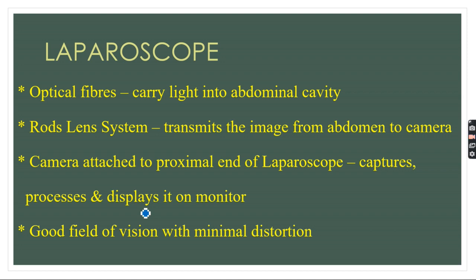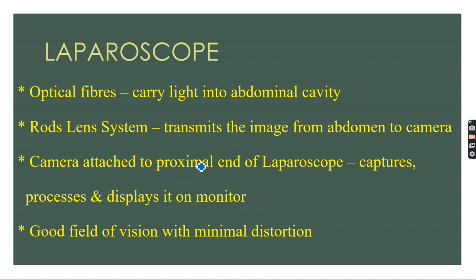The role of optical fibers in the laparoscope is to carry light into the abdominal cavity, whereas the rod lens system transmits the image from the abdomen to the camera. The camera is usually attached to the proximal end of the laparoscope, and its role is to capture and display the image on the monitor. This leads to a very good field of vision with minimal distortion — this is the advantage of using the Hopkins rod lens system.